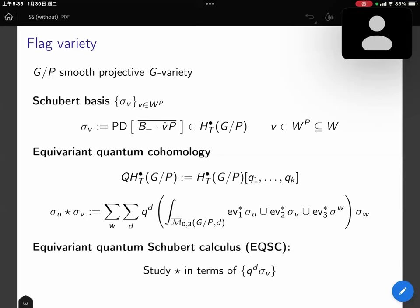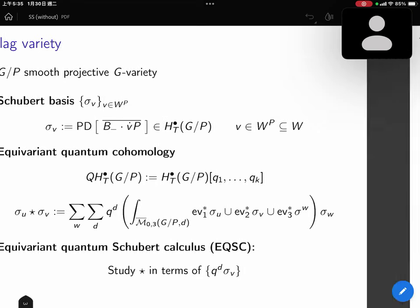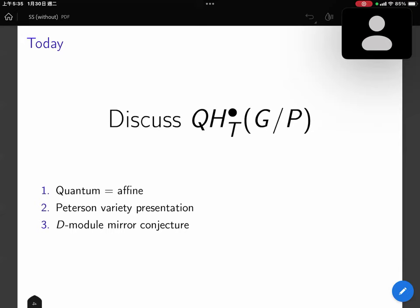The current quantum Schubert calculus studies this quantum product in terms of Schubert basis. Today we are going to discuss this quantum cohomology ring and focus on three results including quantum equals affine, Peterson variety presentation, and D-module mirror conjecture.